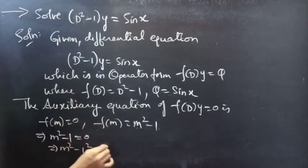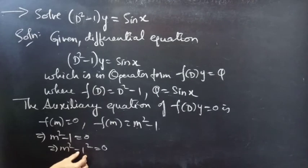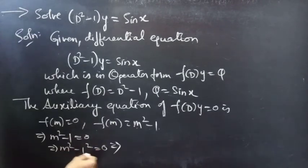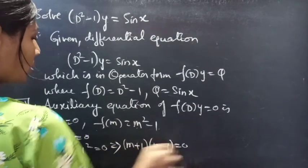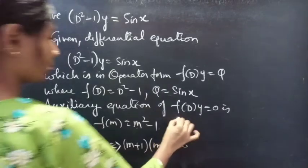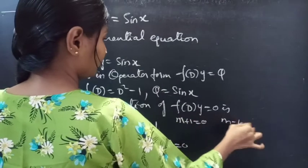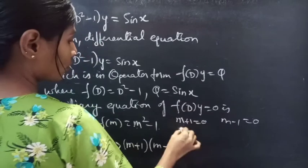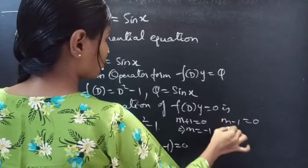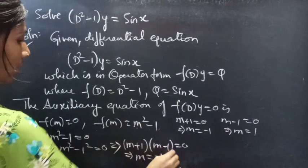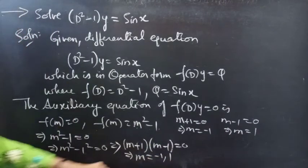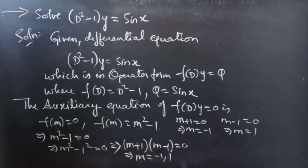Write 1 as 1², so m² - 1² is in the a² - b² form. We can factor this as (m + 1)(m - 1) = 0. Equating each factor to zero: from m + 1 = 0 we get m = -1, and from m - 1 = 0 we get m = 1. So m = -1 and m = 1.